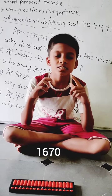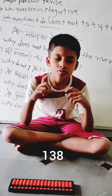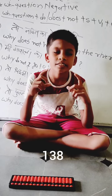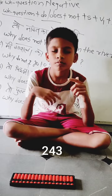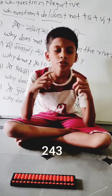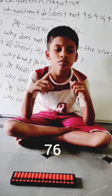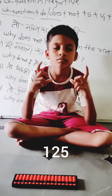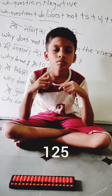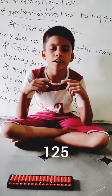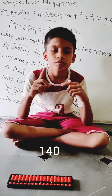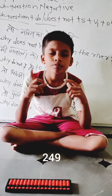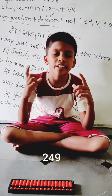69 x 2 = 138. Correct. 81 x 3 = 243. Correct. 19 x 4 = 76. 25 x 5 = 125. Correct. 70 x 2 = 140. Correct. 83 x 3 = 249.